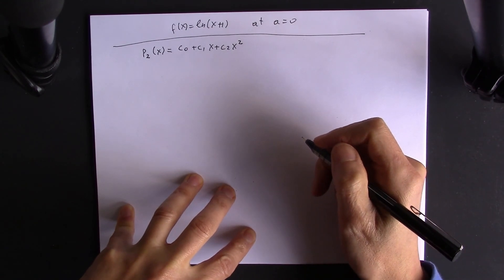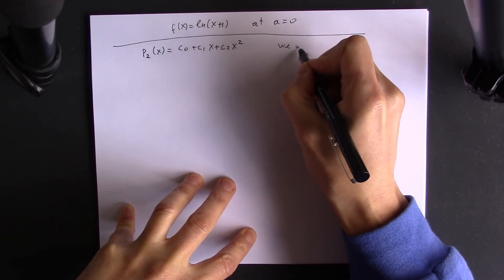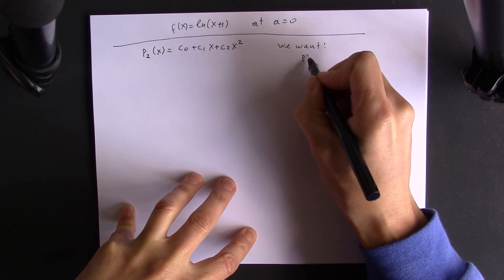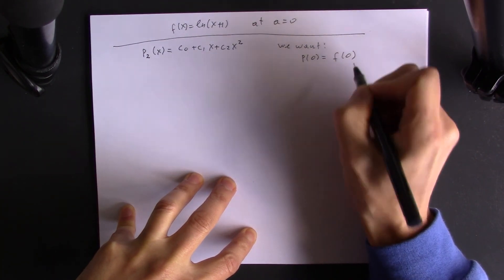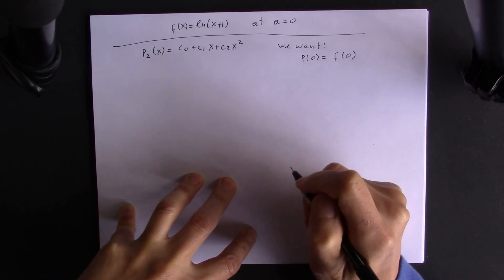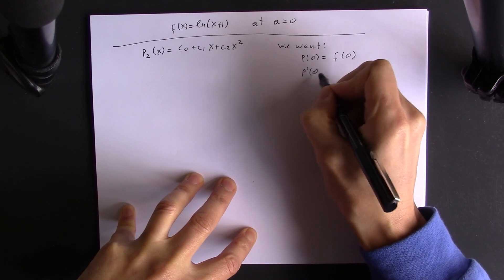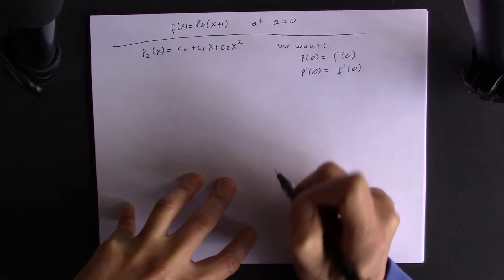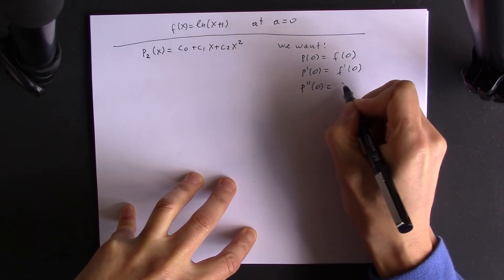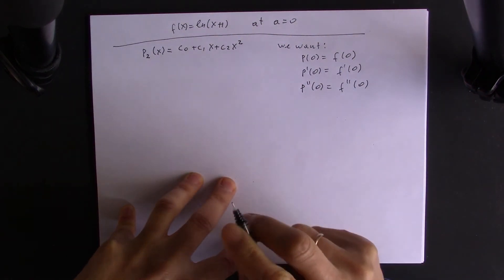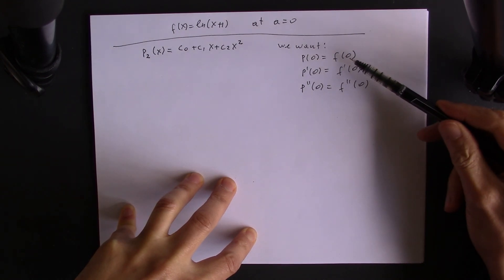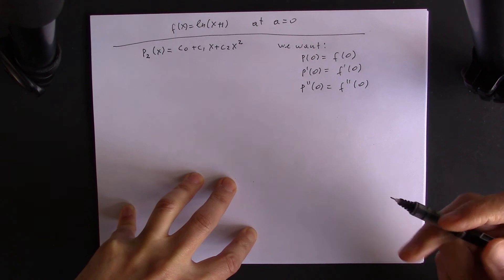We set the following requirements: we want the polynomial to pass through the point at x equals 0, we want it to have the same slope at the given point, and we want it to bend in exactly the same way as the function. So we want the second derivative, the first derivative, and the value of the function all to be the same at a equals 0.